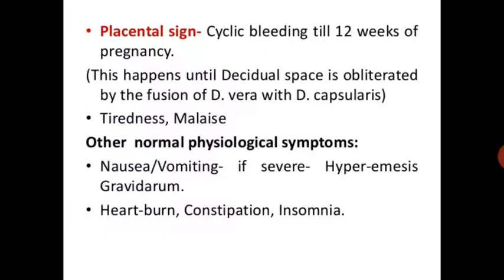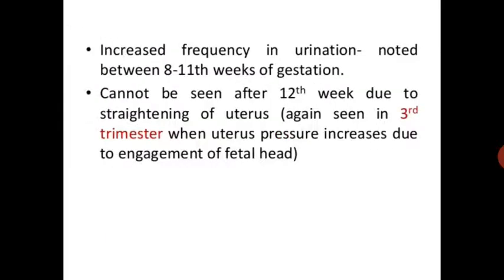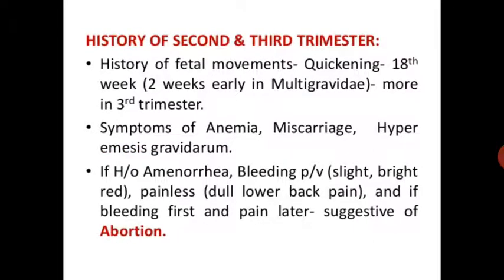Other normal physiological symptoms of the first trimester: nausea and vomiting — if severe, hyperemesis gravidarum; heartburn; constipation; insomnia; increased frequency of urination noted between 8 to 11 weeks of gestation, not seen at 12 weeks due to straightening of the uterus. This symptom is seen again in the third trimester when uterine pressure increases due to engagement of the fetal head. History of second and third trimester: history of fetal movement — quickening at 8 weeks, felt 2 weeks earlier in primigravida; more prominent in the third trimester. Symptoms of anemia should also be noted.